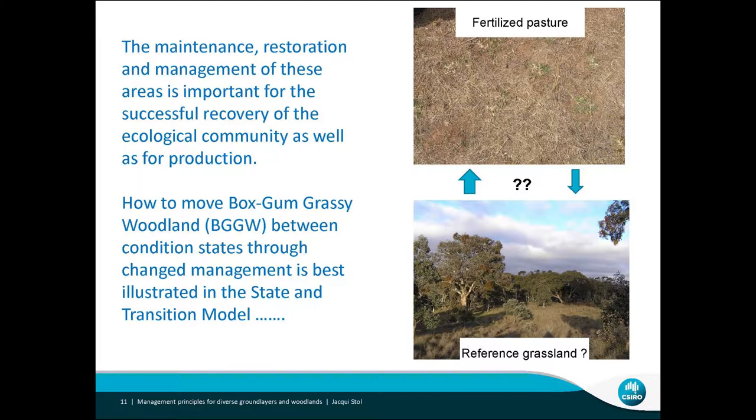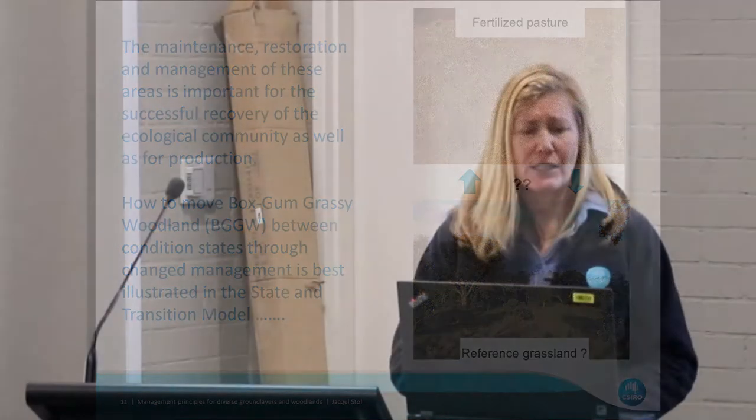I'm going to talk about the state and transition model because it shows how we might move the box gum grassy woodland between different condition and pasture states through changed management. It's one of the best ways to work out whether a fertilised pasture can shift to a reference grassland — if so, why and how? It gives you an understanding of how these systems might work and how they may shift around.